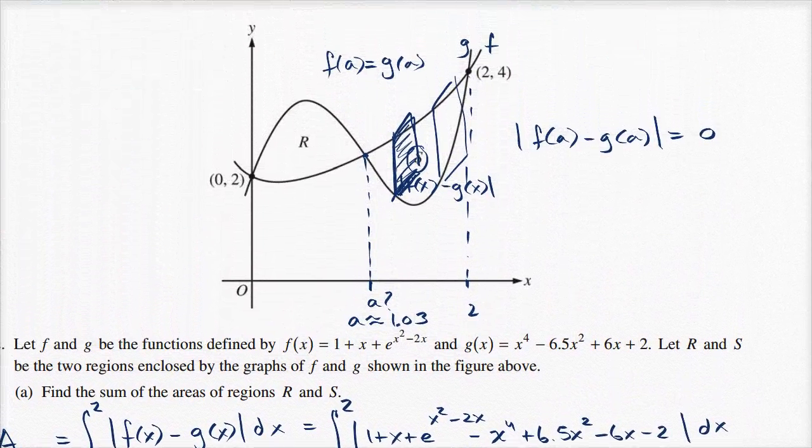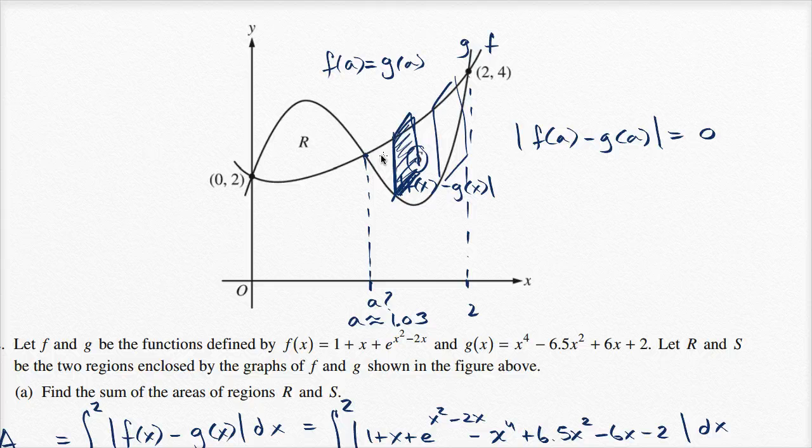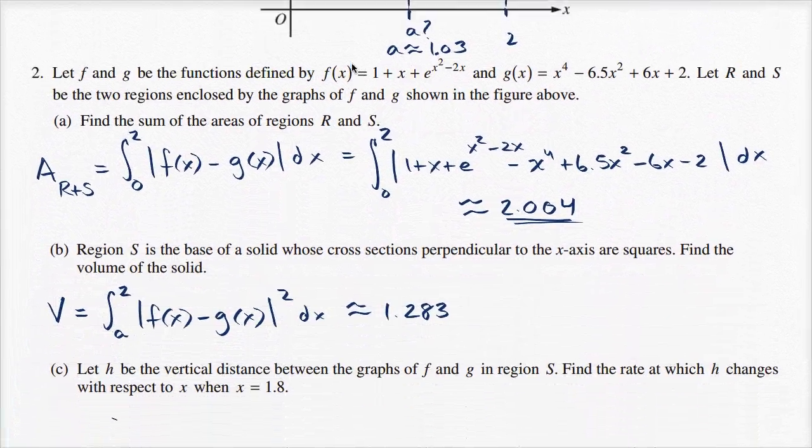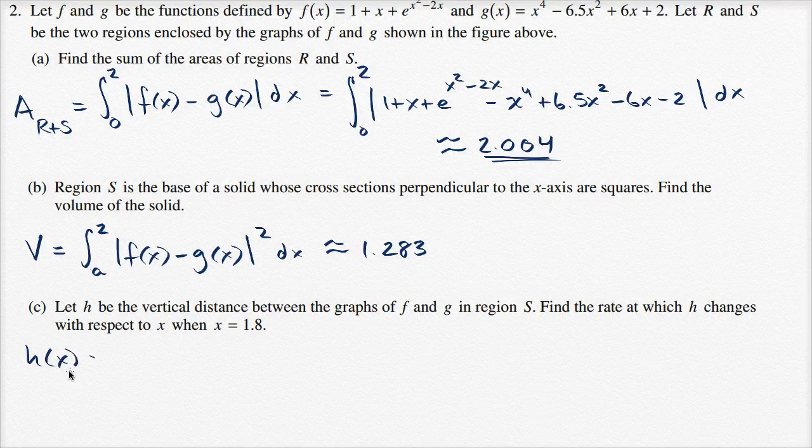So we have region S right over here. You can't see it that well since I drew over it. And what you see in region S, the function f is greater than the function g. It's above the function g. And so we can write h of x. We could write h of x as being equal to f of x minus g of x.